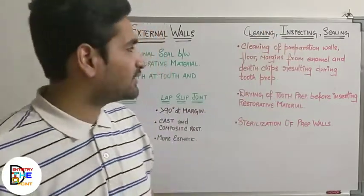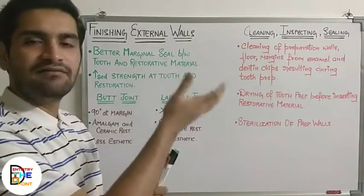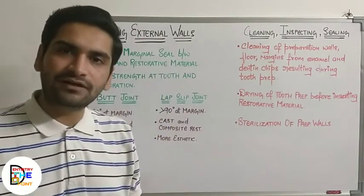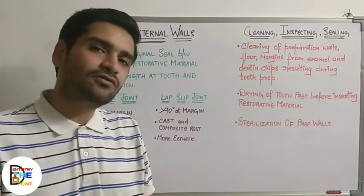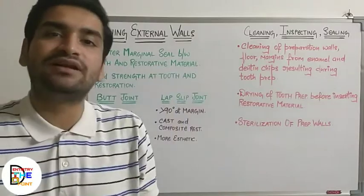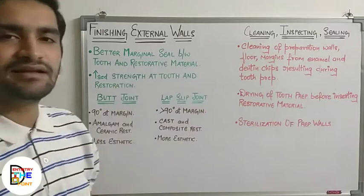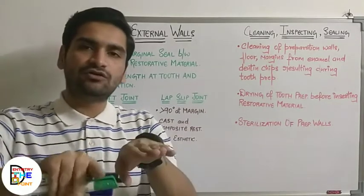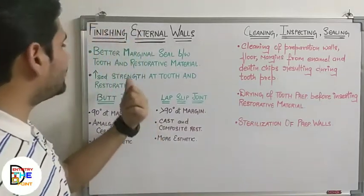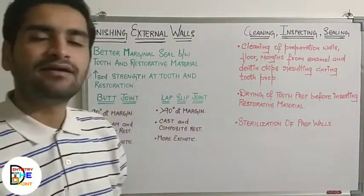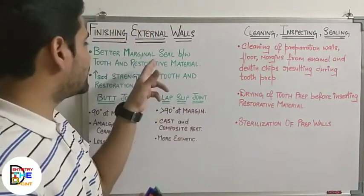Starting with finishing the external wall — each and every external wall of the preparation should be finished properly. The necessity of finishing external walls is to provide a better marginal seal between the tooth and the restorative material, so that there is a tight marginal seal at that interface.